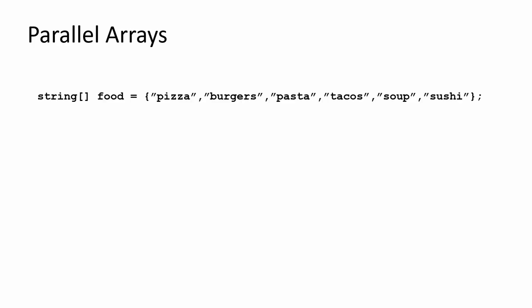First, let's talk about parallel arrays - having more than one array to keep track of a few different data types. In my last video on basic arrays, I had one as an example keeping track of some food items when I was trying to decide what to have for dinner. That array is called food and it's of type string, so only strings can be stored in it.